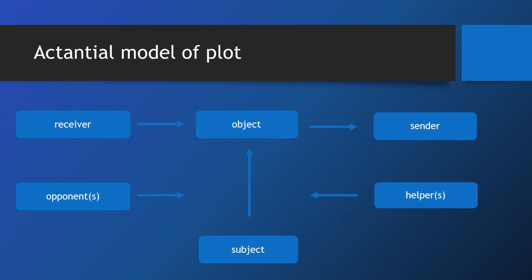The advantage of the Actantial Model is that all actants within it can be characters, but they can also be objects or actions and so on. That does go some way to make the model universal-ish, as was undoubtedly the intent of the creator, the semiotician Algirdas Greimas, who did claim that you would end up with this model if you dug deep enough on any narrative.